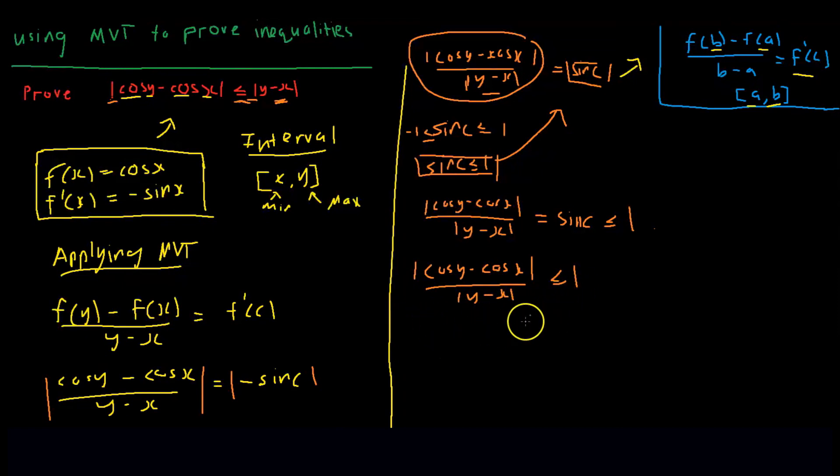Now, all that's left to do is just multiply the y minus x over, so we have absolute value of cos y minus cos x is less than or equal to absolute value of y minus x. Therefore, we have proven the inequality.